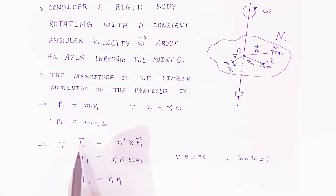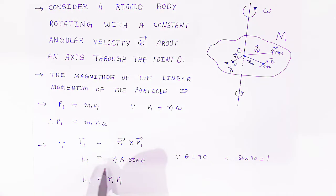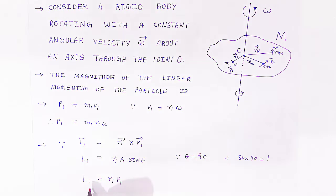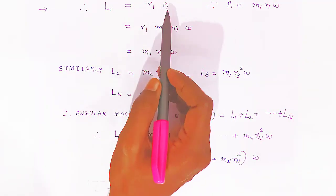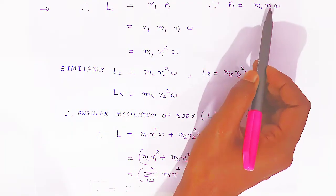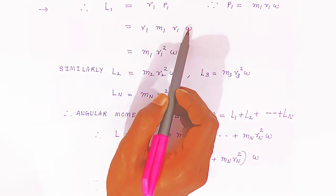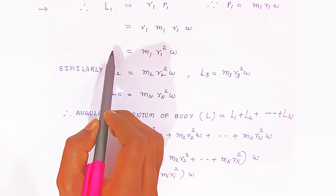Now we find the angular momentum of the first particle. The angular momentum is L1 = R1 cross P1-bar in vector form, or L1 = R1·P1·sinθ in scalar form. Here theta is 90 degrees since R and P are perpendicular, so sin90 = 1, giving L1 = R1·P1. Substituting P1 = M1·R1·ω, we get L1 = R1·M1·R1·ω = M1·R1²·ω. This is the angular momentum of the first particle.